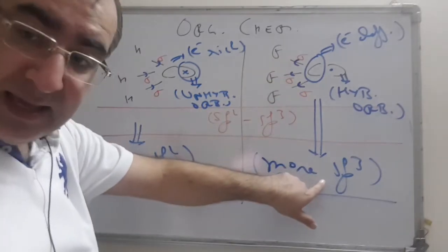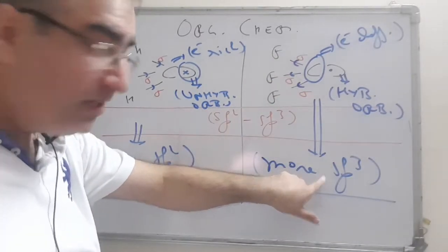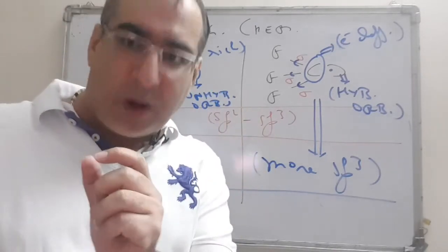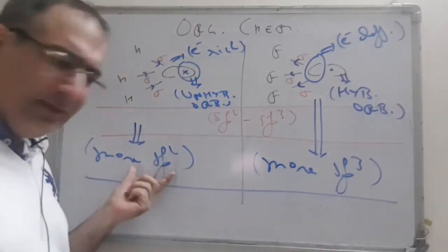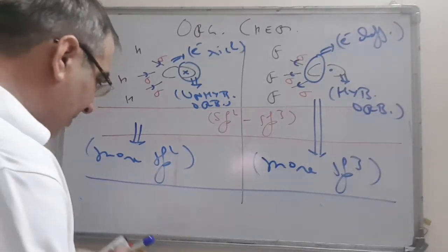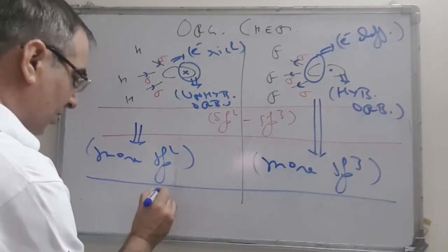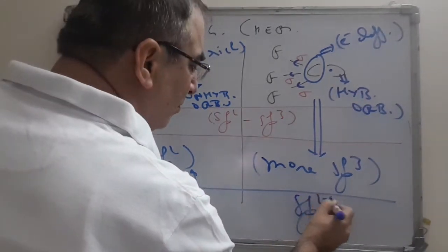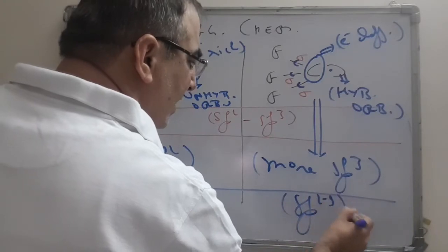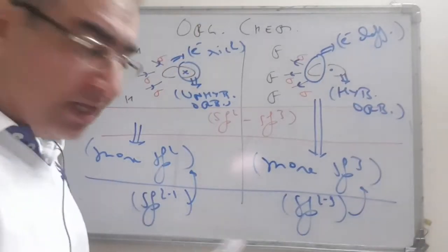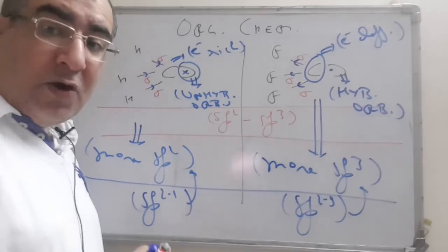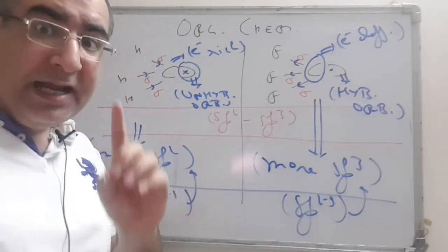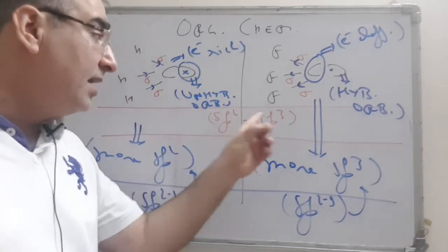So CF3 dot hybridization is defined as sp3 and CH3 dot hybridization is defined as sp2. Actually it is not exactly sp2 or sp3 — it is near about that. Suppose sp2.1 is coming for one and sp2.9 for the other. So 2.9 means it is more near to sp3, and 2.1 means it is more near to sp2. So whenever for odd electron species you have to determine hybridization, it actually lies in a range.